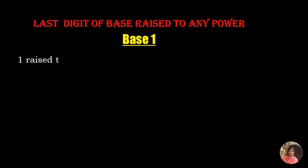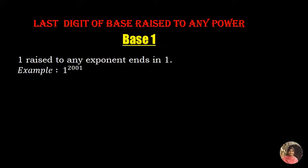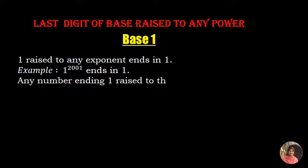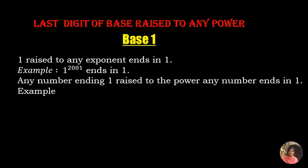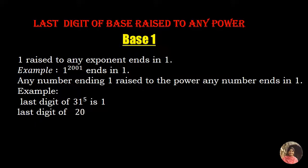First, we will talk about base 1. 1 raised to any exponent ends in 1. For example, 1 raised to the power 2001 ends in 1. Any number ending in 1 raised to power any number ends in 1. For example, last digit of 31 raised to the power 5 is also 1. Last digit of 2001 raised to the power 2001 is also 1.